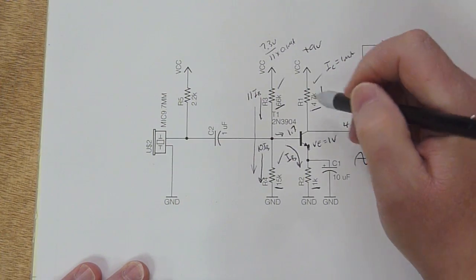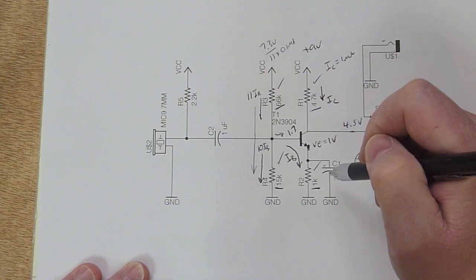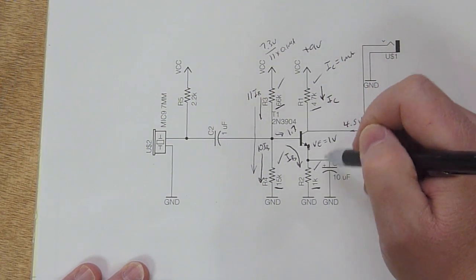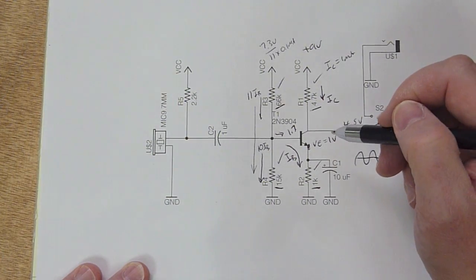So this resistor is taken care of, this one's taken care of, this one's taken care of, and this one we chose to be 1K for our 1 volt emitter voltage and 1 milliamp collector current.